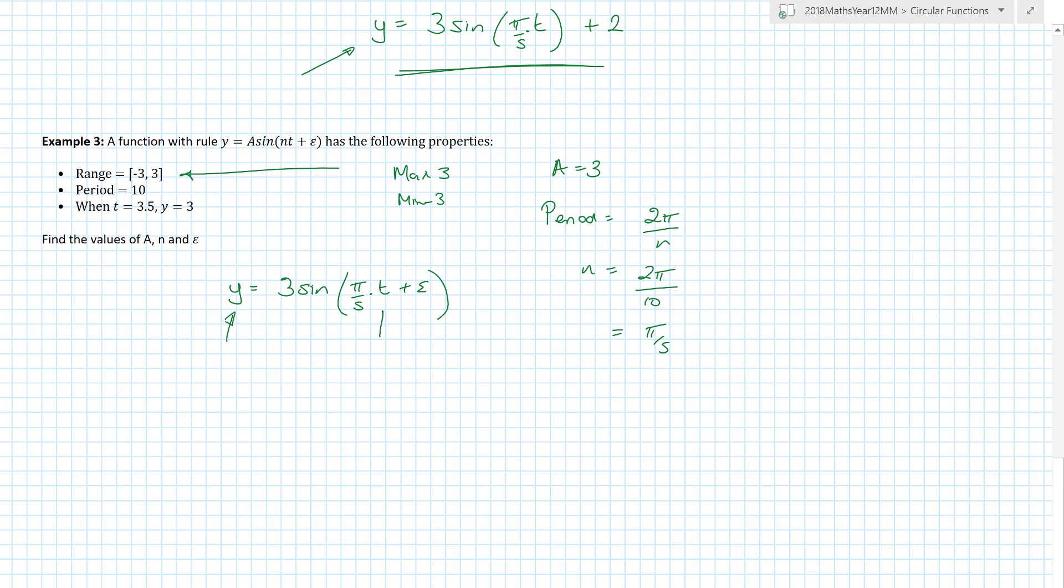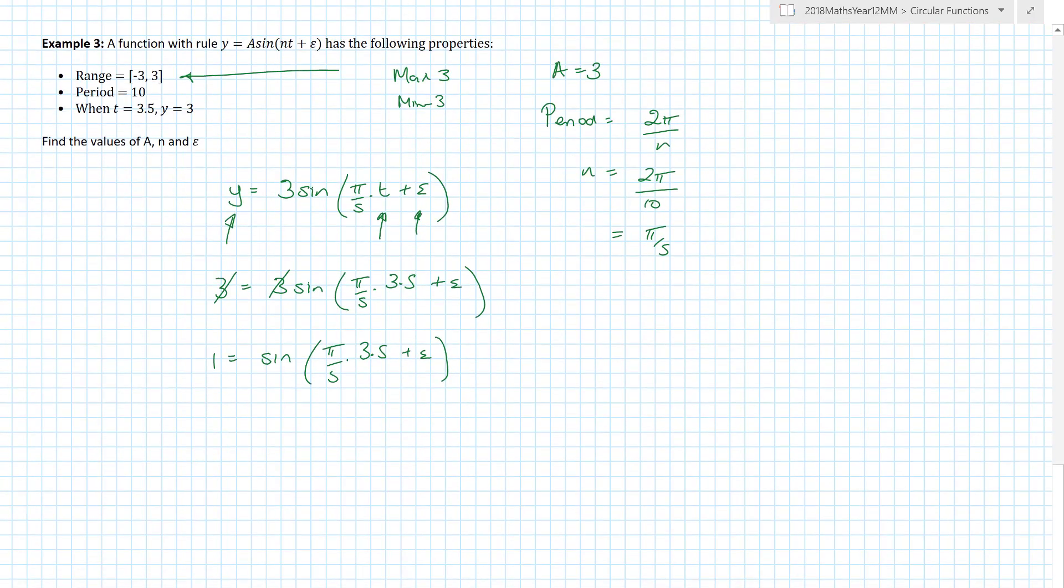Well to find epsilon, what two pieces of information do they need to give me? Well I've got three unknowns at the moment. If they give me two of the unknowns I can find the third one, and lo and behold that's what happens. So when y is 3 equals 3 sine π on 5 times t of 3.5 plus epsilon, divide both sides by 3 gives me 1 equals the sine of π on 5 times 3.5 plus epsilon.